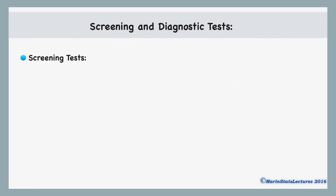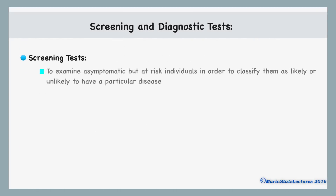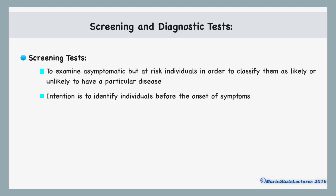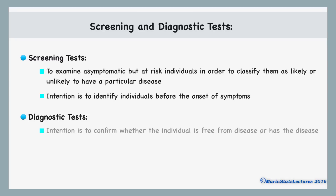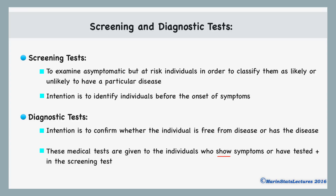Screening tests are used exactly as the name suggests — to screen individuals. They are given to individuals who are not yet demonstrating any symptoms but are considered to be at risk. The intention is to identify individuals early on before they start to show symptoms. Diagnostic tests are administered with the intention of confirming the disease or confirming that the person does not have the disease. They are generally given to individuals who are showing symptoms or who have tested positive in a screening test.